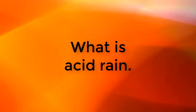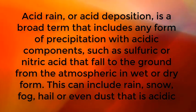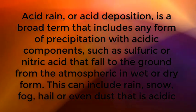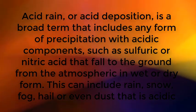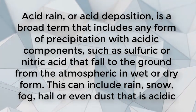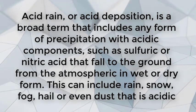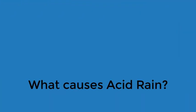Acid rain, or acid deposition, is a broad term that includes any form of precipitation with acidic components such as sulfuric or nitric acid that fall to the ground from the atmosphere in wet or dry forms. This can include rain, snow, fog, hail, or even dust that is acidic. What causes acid rain?